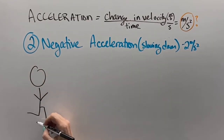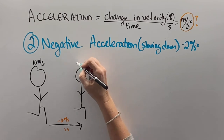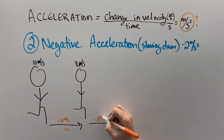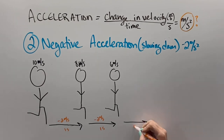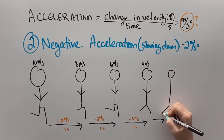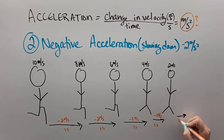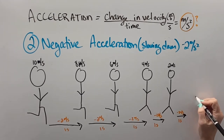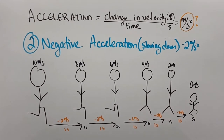Negative acceleration is slowing down. To be negatively accelerating, you have to be going a certain speed to begin with. If we started at 10 meters per second and had a negative 2 meters per second squared acceleration, after one second we would be going 8 meters per second. The next second, 6 meters per second. Then 4 meters per second, then 2 meters per second, and finally we would reduce our speed to 0 meters per second and be stopped. So each second, we are going two meters per second slower — that's the idea of negative acceleration.